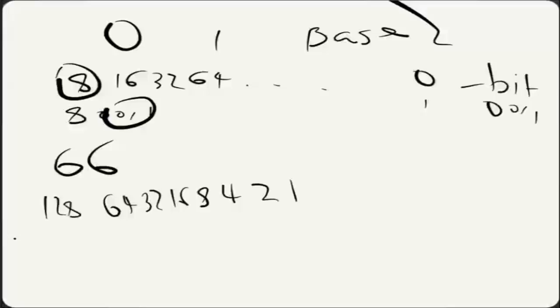Now, the amount of times we did that was 8 times. So we have 8 values: 1, 2, 4, 8, 16, 32, 64, and 128. You'll find that we have 8 values there. Now, to represent our number 66, we have to test all our values starting from the leftmost number, which is 128.